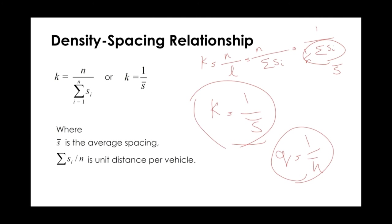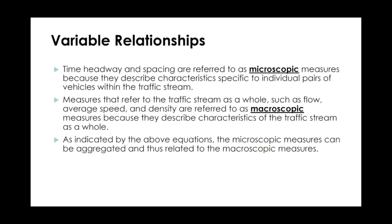Flow, speed, and density are called macroscopic measures because they capture average characteristics across multiple vehicles. Headway and spacing are referred to as microscopic measures because they describe characteristics specific to individual pairs of vehicles. Spacing is the front-bumper-to-front-bumper distance between successive vehicles, while headway is the time between front bumpers passing a fixed point.